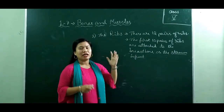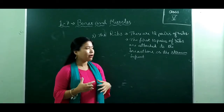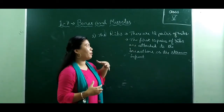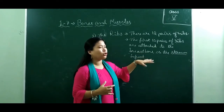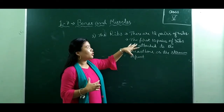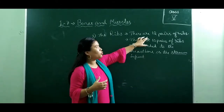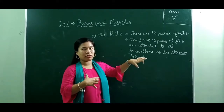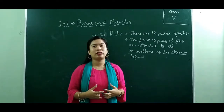The third part is the ribs. The ribs are thin, flat, and curved bones that form a cage around the heart and lungs to protect them. There are 12 pairs of ribs. The first 10 pairs are attached to the breastbone, also called the sternum, at the front. The remaining 2 pairs are not attached to the sternum and are called floating ribs.